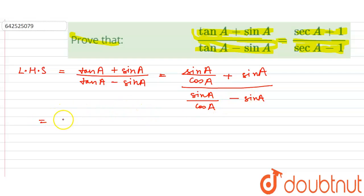Now just take out sin A common from the numerator. It gets 1 by cos A plus 1, and we can do a similar thing for the denominator. Taking out sin A would give us 1 by cos A minus 1.